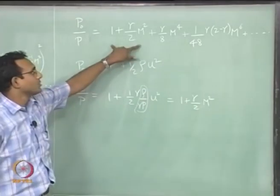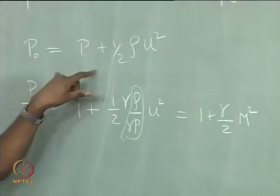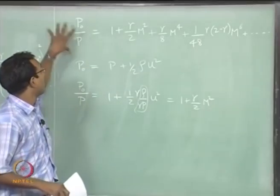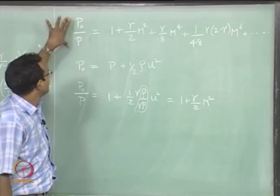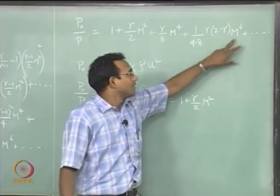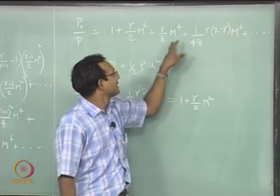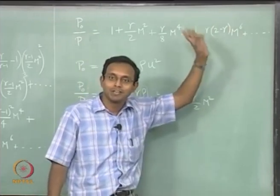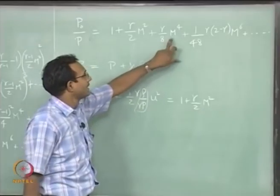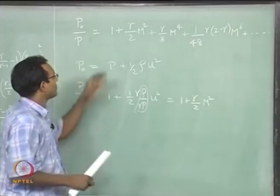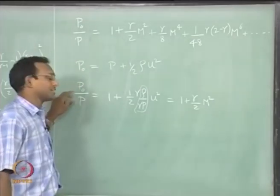This is the first two terms of the full expansion we have. So what we have done essentially is: when we use Bernoulli's equation, we are using only the first two terms of our full compressible flow expression derived without using Bernoulli's equation anywhere. This is the full expression — when Mach number is very very small, I can neglect m⁴, m⁶, and higher terms. So I am okay using Bernoulli's equation only for very low Mach number cases, linking stagnation and static pressures.